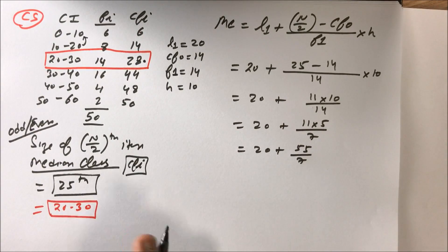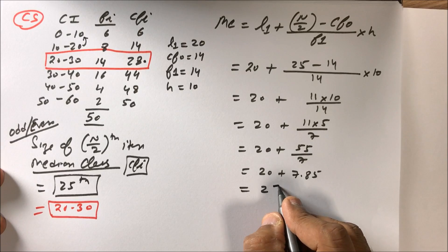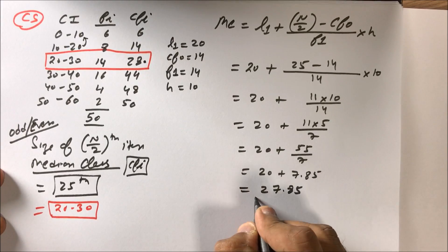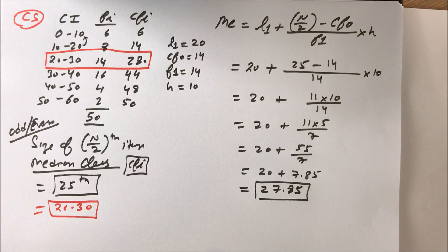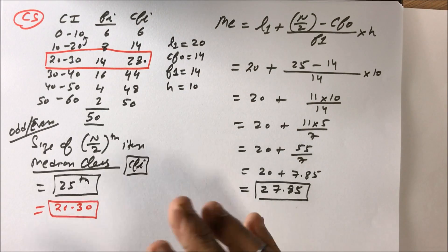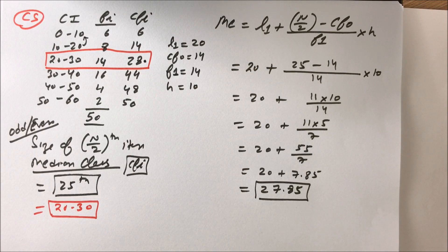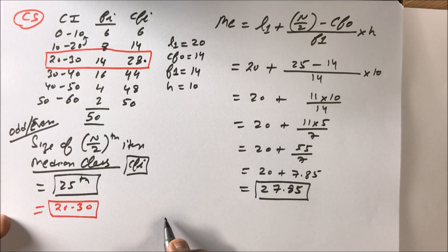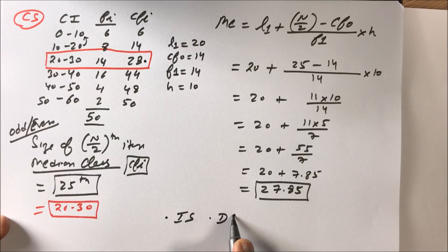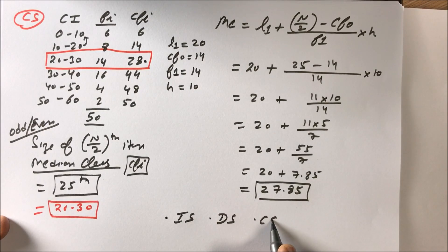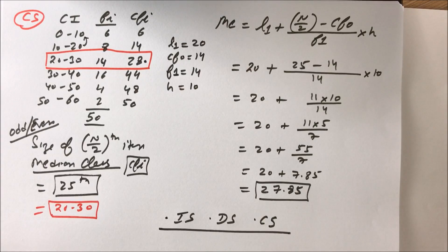The answer is approximately 27.85. So that is how to find the median in continuous series. We have now covered median in individual series, discrete series, and continuous series. Keep watching our channel AVTE.